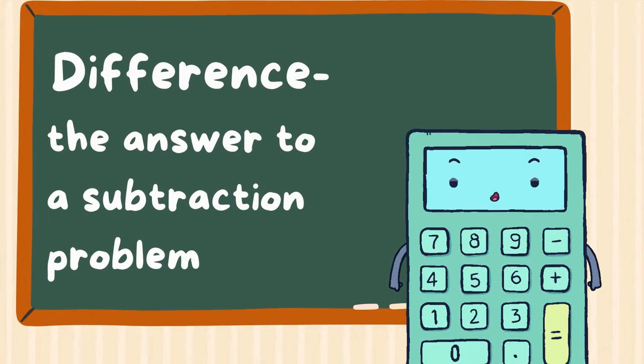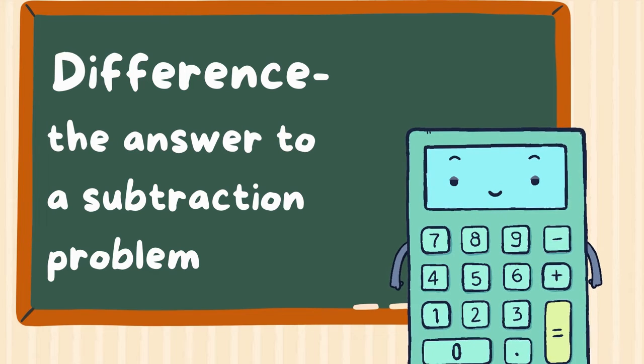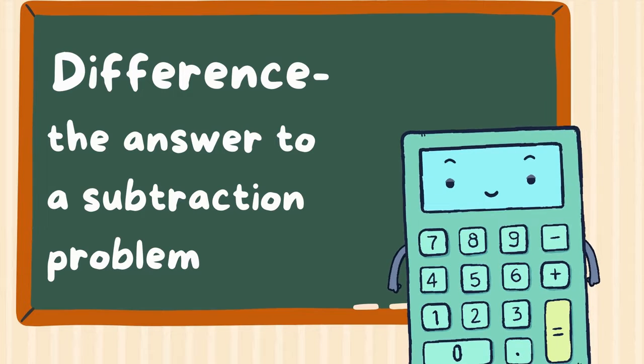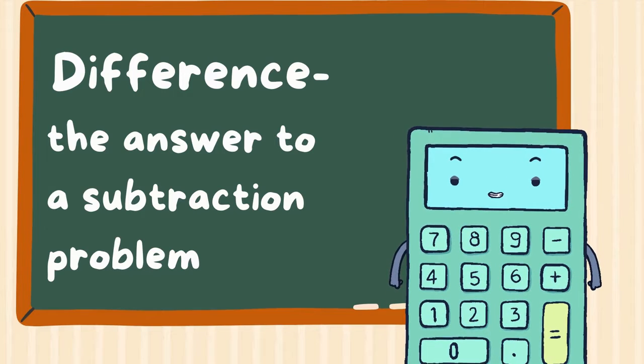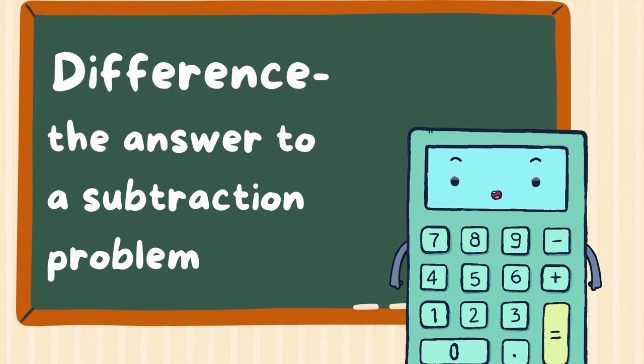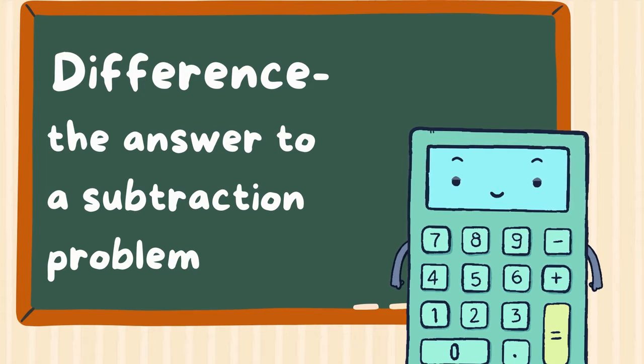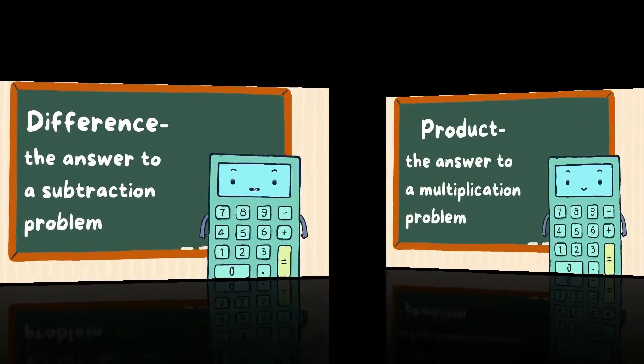The second word is difference, spelled D-I-F-F-E-R-E-N-C-E. A difference is the answer to a subtraction problem. When we subtract one amount or number from another amount or number, this is called the difference. If you are asked to find the difference, you are going to be doing a subtraction problem.